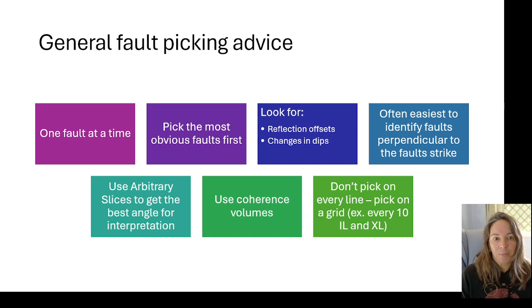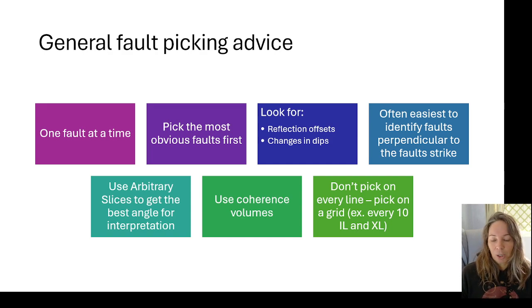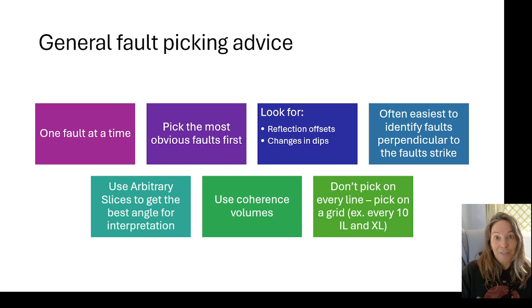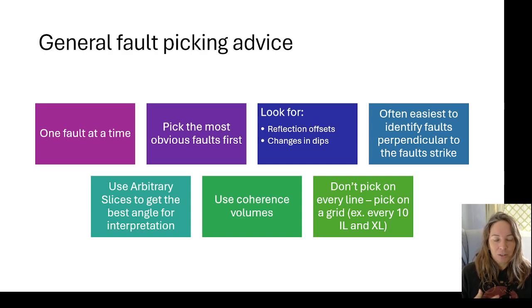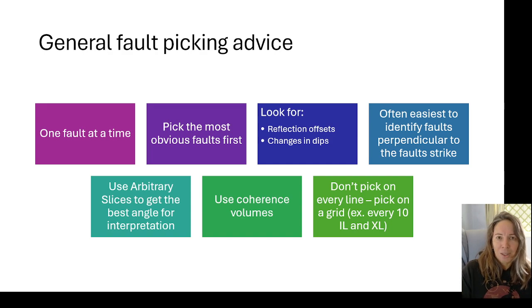You don't need to pick on every line but rather on a grid depending on how complicated your region is — maybe every 10 inlines and cross lines, maybe every 20. I tend to use an adaptive picking strategy where in more complex areas I may pick every five lines or every two lines, or in some cases every line. I'm not a big fan of auto picking — I like to manually pick myself. This is all part of the process of trying to get the framework and understand the data before I start using some of the auto pickers, particularly in 3D.